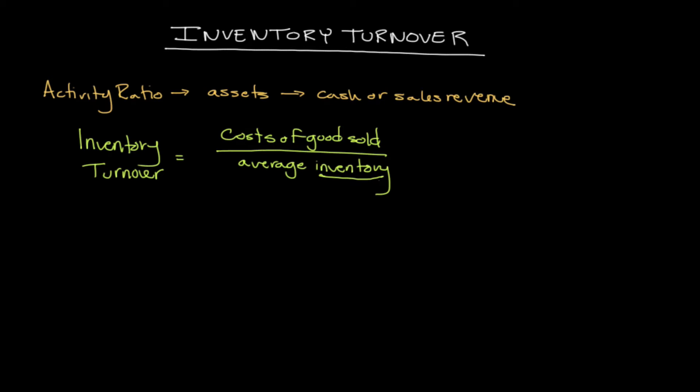For example, if you're calculating inventory turnover for a given year, take the beginning inventory at the start of the year and the ending inventory at the end of the year, add those numbers together, and divide by two to get average inventory. So, with a cost of goods sold of $350,000 divided by average inventory of $125,000, we get an inventory turnover ratio of 2.8.